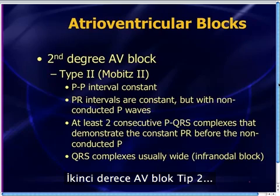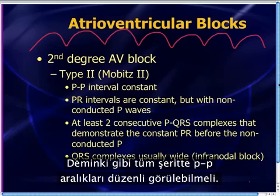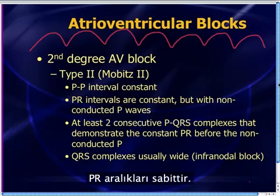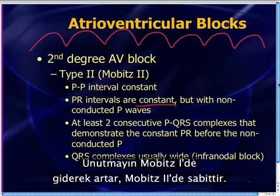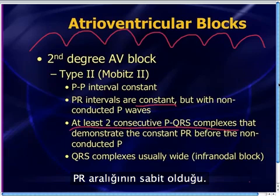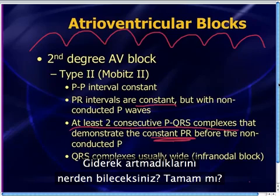Second-degree AV block type 2, also known as Mobitz 2. Once again, you need to have P-to-P intervals that map out regularly all the way across. PR intervals are constant, but with non-conducted P waves — remember, in Mobitz 1 they are increasing; in Mobitz 2 they stay constant. You need to have at least two consecutive PQRS complexes that show a constant PR. If you don't have two consecutive PQRS complexes, how do you know that the PRs would have been constant or wouldn't have been increasing?